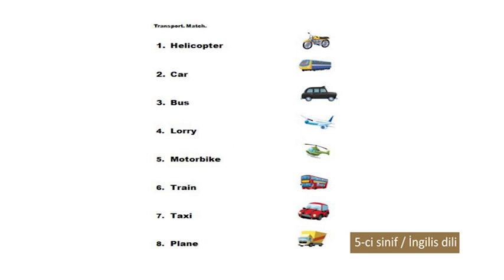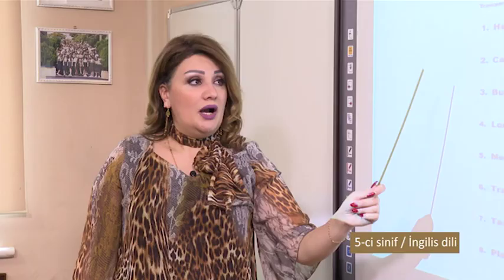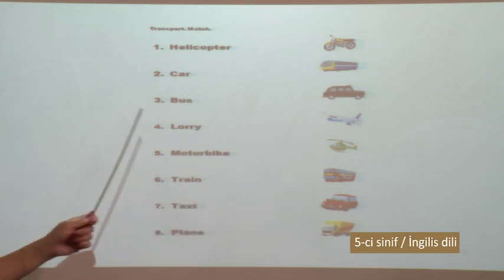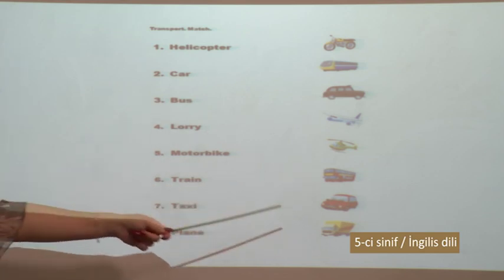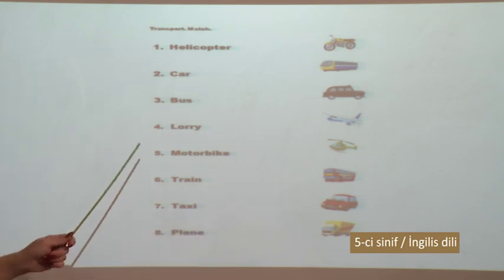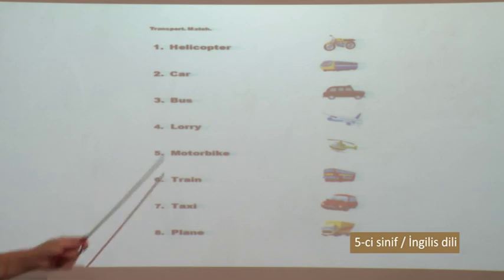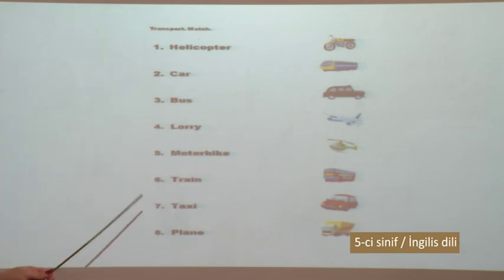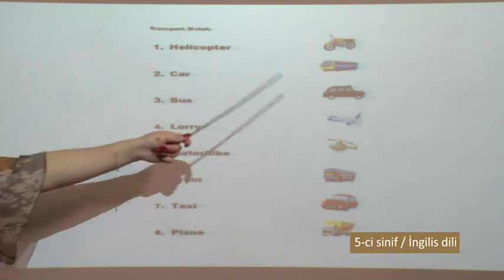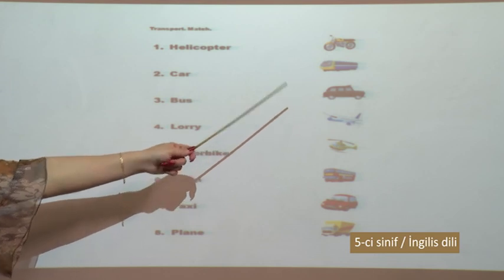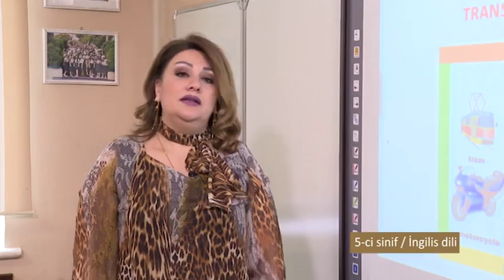We should match these words to their pictures, according to their pictures. Helicopter goes to this picture. Bus - of course this is a picture of bus. Lorry - as you see, this is a lorry. Motorbike - this is a motorbike. Train - this is a train. Taxi - this is a taxi. Plane - this is a plane. And this is a car.